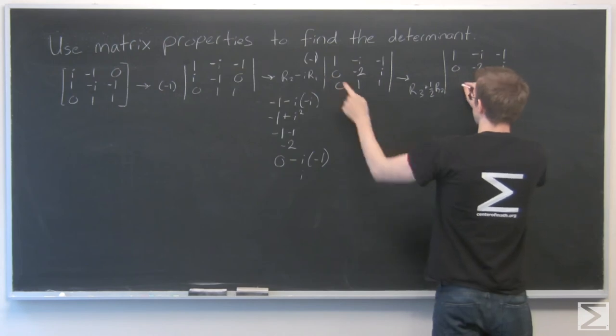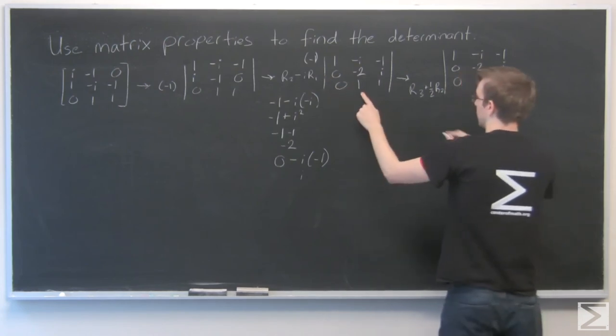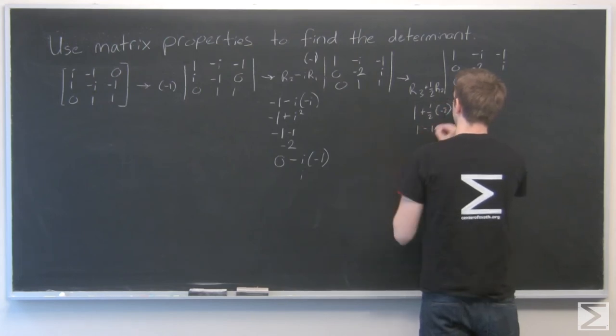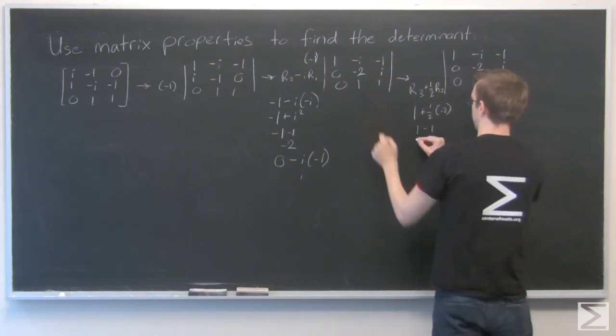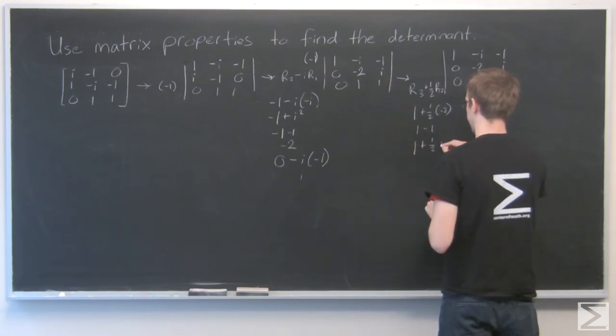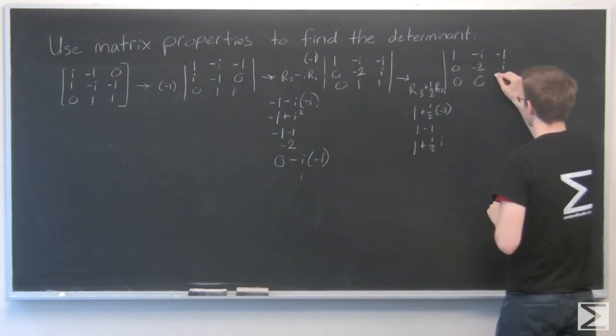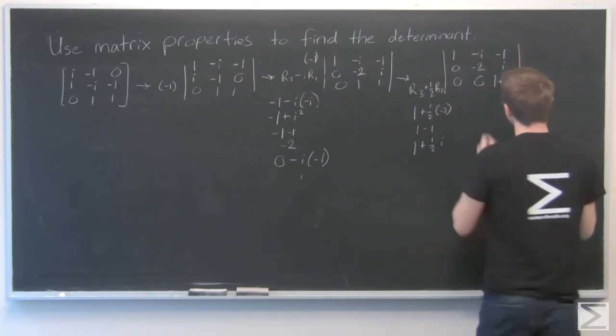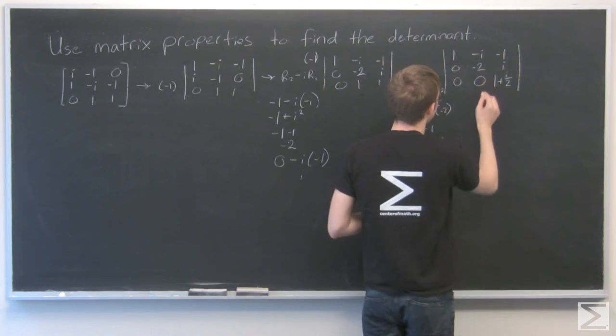Zero and zero, that makes zero. One plus one half times negative two is one minus one. So that's zero. And one plus one half times i. That makes one plus i over two.